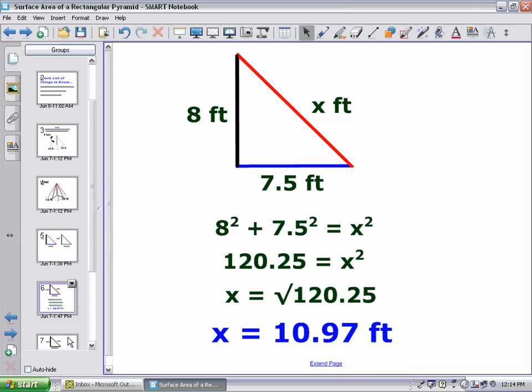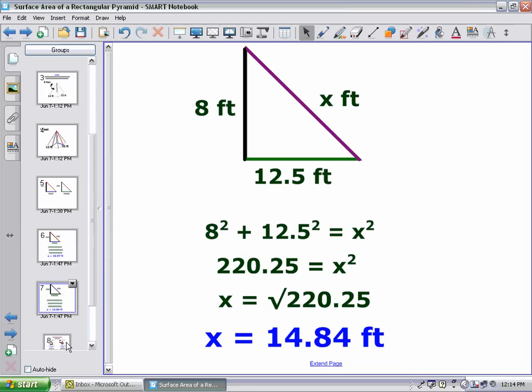Now, I color-coded this for a reason so everybody doesn't get lost. 10.97 goes with the red value using the Pythagorean theorem. Again, I do this, and this time when I go through my Pythagorean theorem, 8 times 8 plus 12.5 times 12.5 comes out to be 220.25, and the square root of that is 14.84 feet. This goes along with the color-coded purple slant height, which are basically the heights of the triangles in the front and the back.